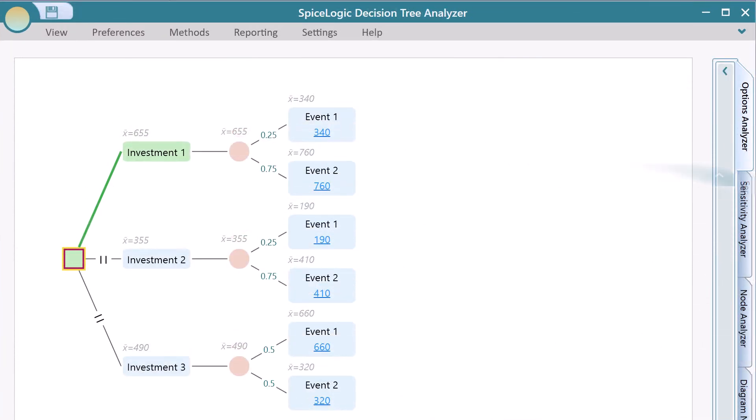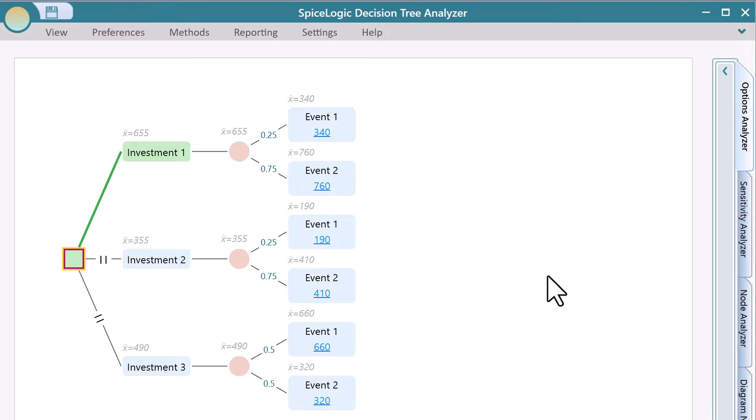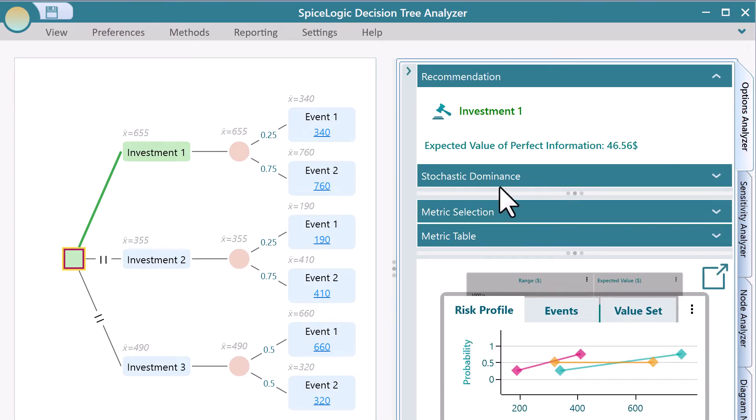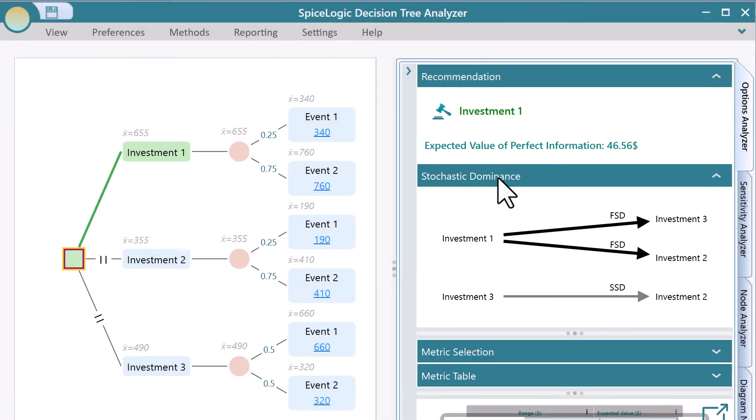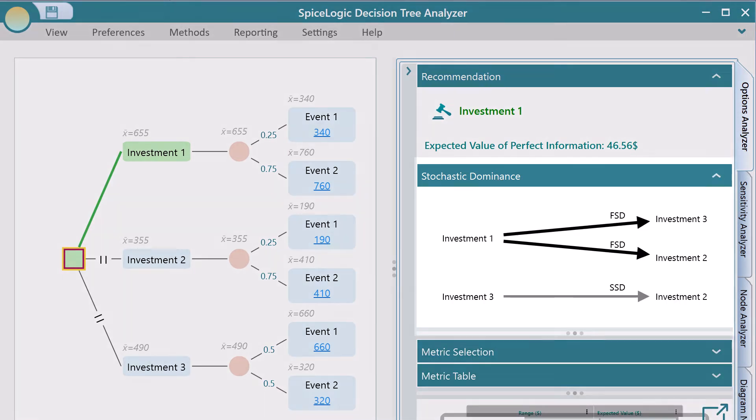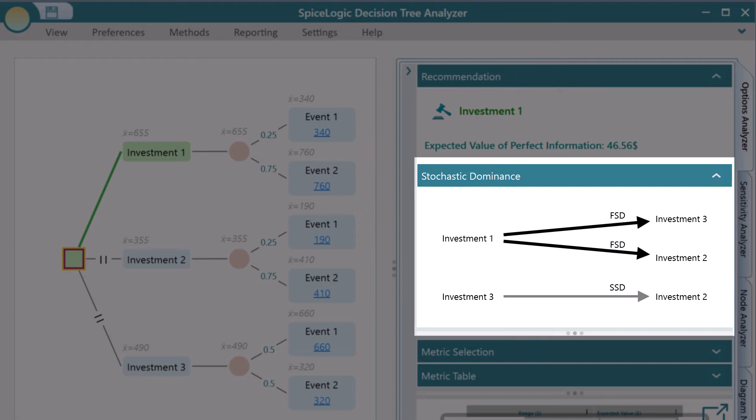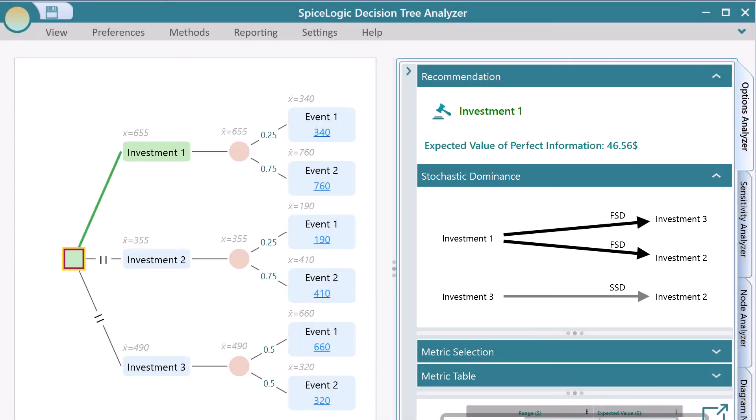For example, say you have a decision tree like this. Now, if you expand the options analyzer for the above tree, you will see the stochastic dominance panel. You can expand the stochastic dominance expander and then you will see the picture like this. It will show which option dominates another option in stochastic dominance or deterministic dominance.